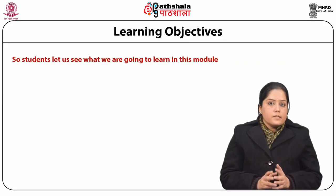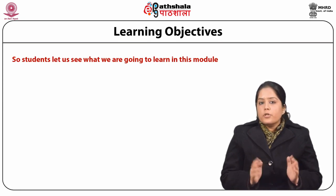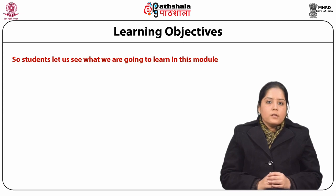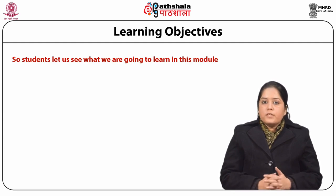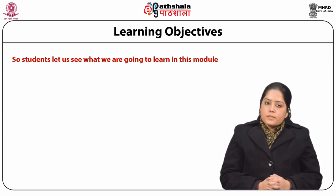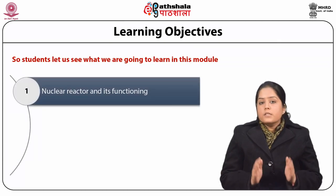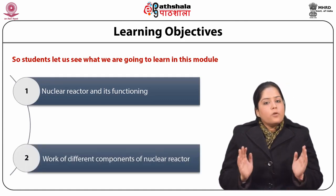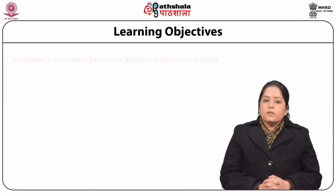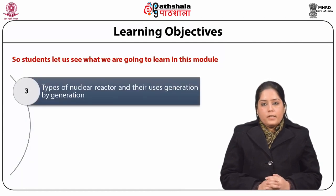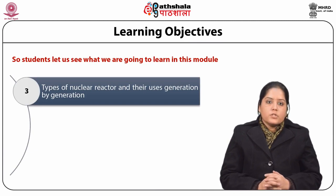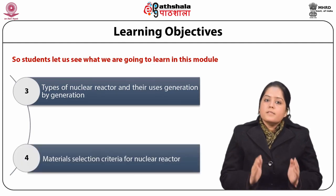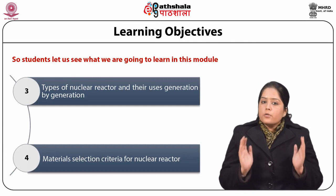So students, let us see what we are going to learn in this module. From this module, students may get to know about the following things: first, nuclear reactor and its functioning; second, work of different components of nuclear reactor; third, types of nuclear reactor and their uses generation by generation; and lastly, materials selection criteria for nuclear reactor.